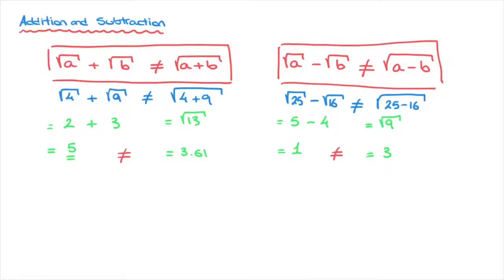In general, the square root of a minus the square root of b is not equal to the square root of a minus b. Not knowing this formula leads to mistakes, so make sure to write that down. Now that we've seen those two important rules for addition and subtraction, let's look into multiplication and division.